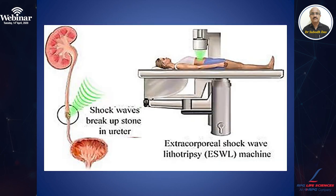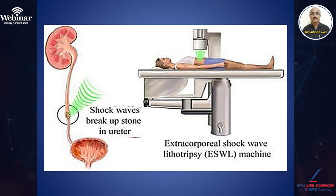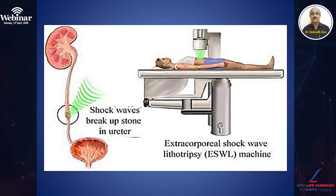This is a picture of a typical ESWL machine — extracorporeal shockwave lithotripsy. Shockwaves in various forms directly hit the stone; the stones break into pieces and over a few sessions, the fragments pass in the urine. This is an internal picture of how the shockwaves hit the stone and the stone gets broken into fragments.